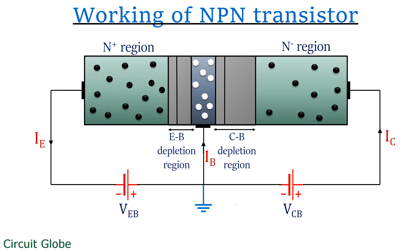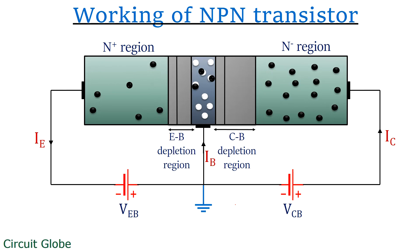The forward applied potential at the emitter-base junction allows the movement of majority charge carriers from one region to another. As the width of the depletion region over the emitter-base junction is thin, the electrons gain enough energy from the external potential and move towards the base region. As the base region is lightly doped, only few of the electrons get combined with the holes present in the P base region and the rest move towards the collector region. This is because the reverse applied voltage at the collector-base junction provides a strong electrostatic field to the electrons moving from the emitter region to the collector region. After a certain period of time, the recombined holes and electrons at the base region get separated and these electrons further move towards the collector region.